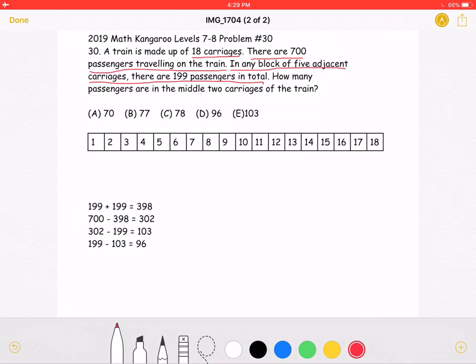Which would each be 199 passengers. So these first 5 would be 199. And these last 5 would also be 199.